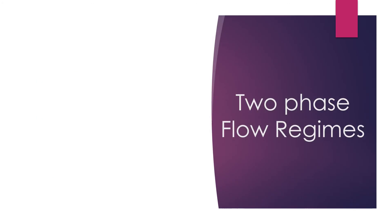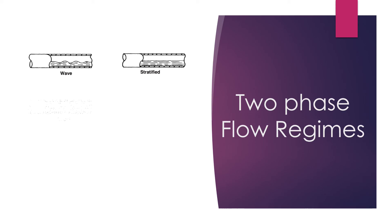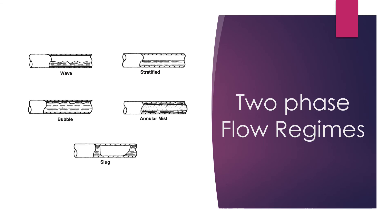Two-phase flow is the most critical type of fluid flow because its calculation is much more complex. It is very sensitive to changes in fluid conditions and pipe orientation, which can cause changes in flow regimes. There are various types of flow regimes for two-phase flow: wave flow, stratified flow, bubble flow, annular mist flow, and slug flow, which is the most dangerous one. Slug flow is undesirable as it can cause vibration and severe damage to the pipe.